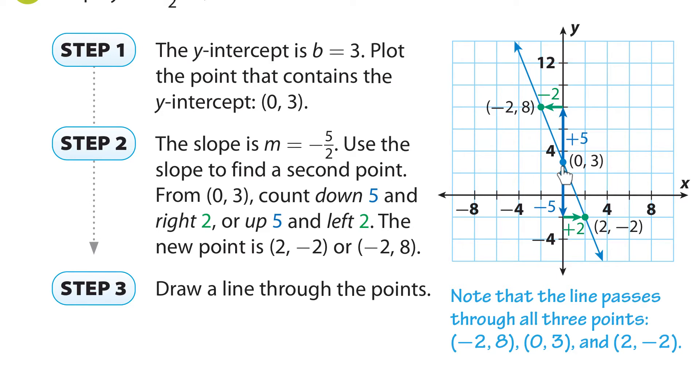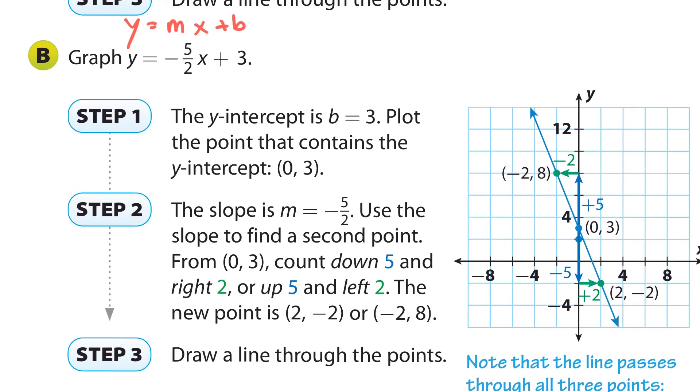And we could note here that the line passes through all these points. (0, 3). And then another point it passes through is (2, -2). Right there, two, negative two. And it passes also through, if I go up five and to the left two, that's (-2, 8). So using our equation, we can easily plot three points, or as many points as we want. We just have to repeat the slope.